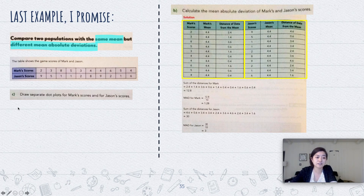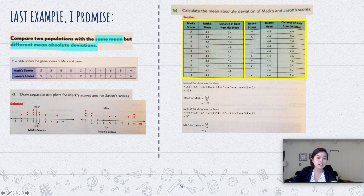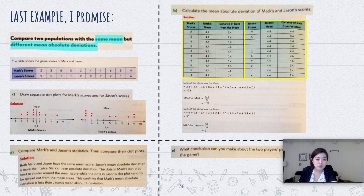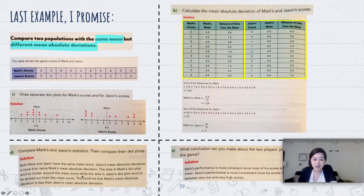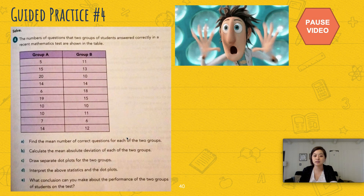For part C, looking at the dot plots for Mark and Jason: Mark's scores are clustered closer to the mean, while Jason's scores are more spread out. This confirms what the MAD showed — Jason's scores are not clustered around the mean as much as Mark's, and Mark's scores are more consistent overall.